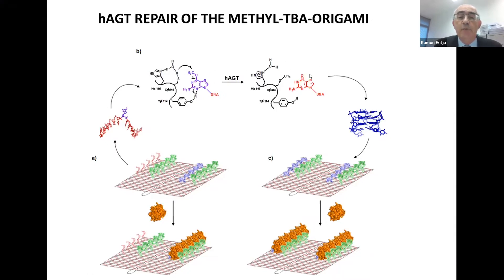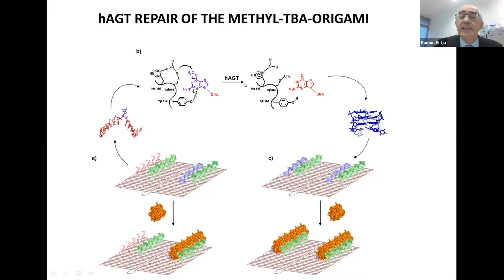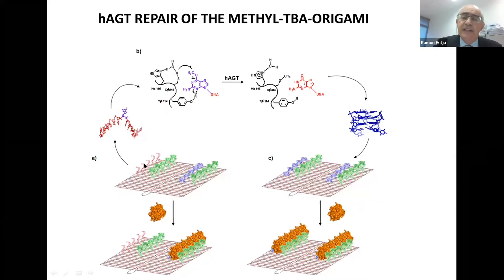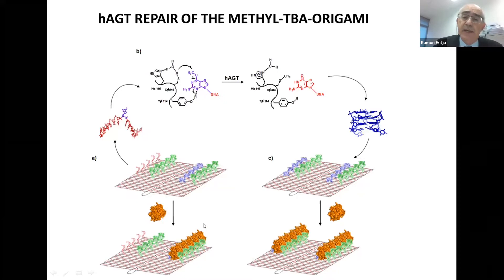What we designed was a series of aptamers — some on the right and some on the left — modified with this methyl guanine. When we add the enzyme, the modified thrombin aptamer becomes unmodified, and you see thrombin binding on the right and on the left. So in the absence of the enzyme, you only see thrombin on the right, but if we add this enzyme, you get thrombin on both sides.